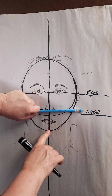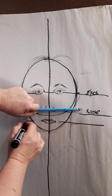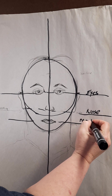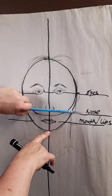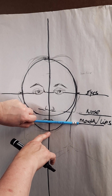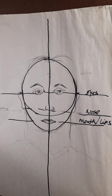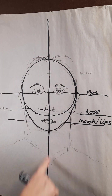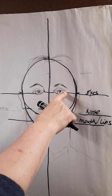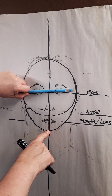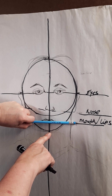Now halfway between the nose line and the chin is going to be your mouth — the mouth or the lips. So halfway between the eyes and the chin is the nose, and halfway between the nose and the chin is the mouth. You always measure from the chin on up. You should have three lines: a cross through the entire thing, your eyes in the center of that cross, halfway between the eyes and the chin is the nose, and halfway between the nose and the chin is the mouth.